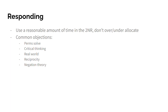The last objection is negation theory. Basically, the negative's purpose is to negate the resolution — how they do that does not matter. That's the only burden they have as the negative. How they go about testing the affirmative or disproving the affirmative doesn't matter. So they can make as many condo arguments as they want, because at the end of the day, their burden is to disprove the affirmative.